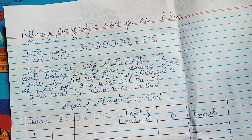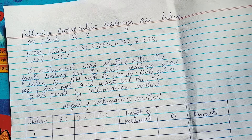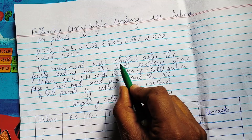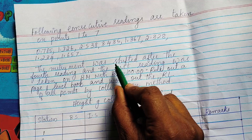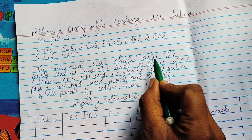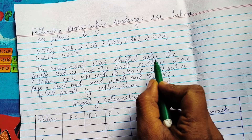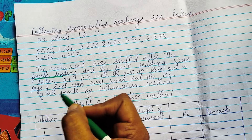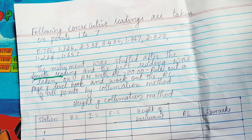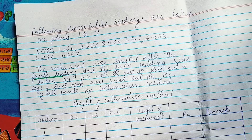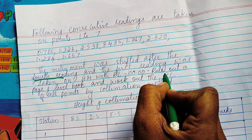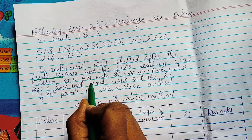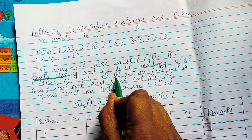We have to complete the table and the conditions. The instrument was shifted after the fourth reading. We have to complete the first reading, the benchmarking, and the reduced level (RL) using the height of collimation method.